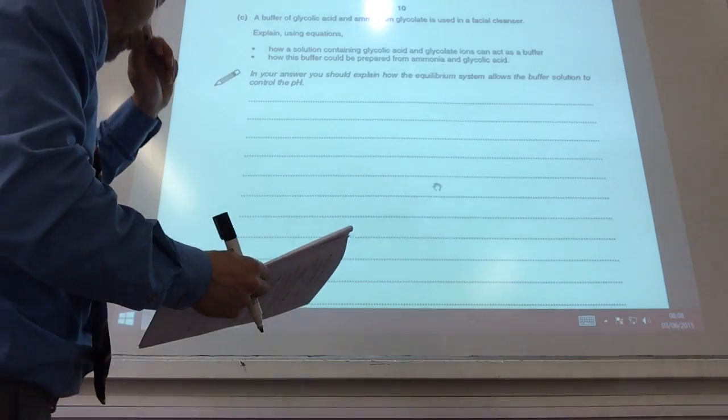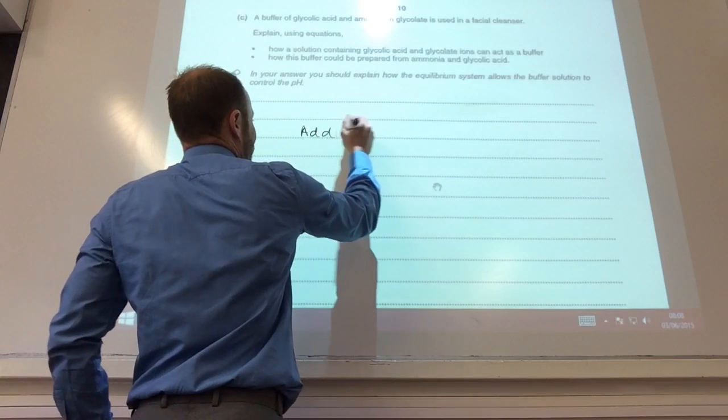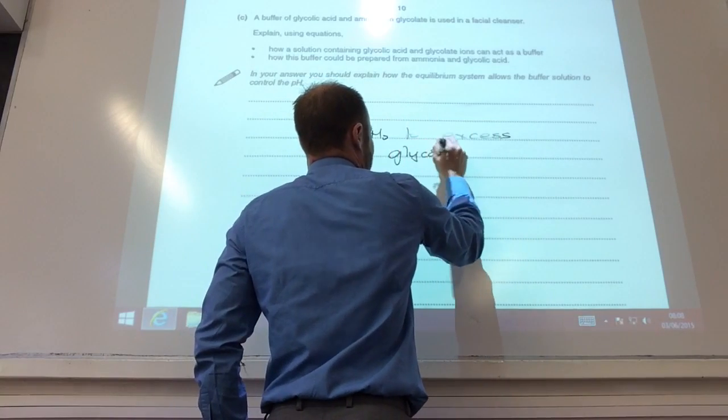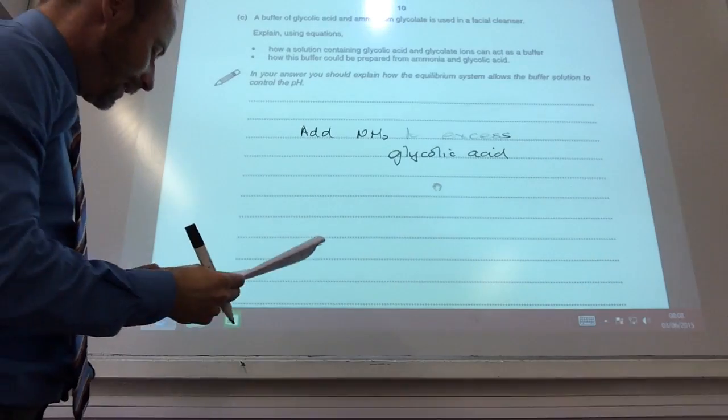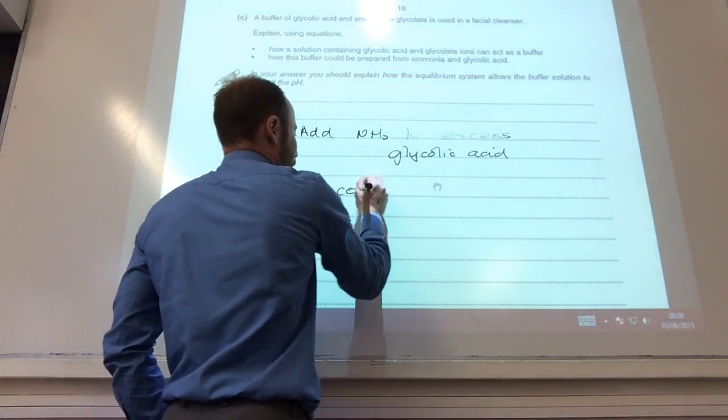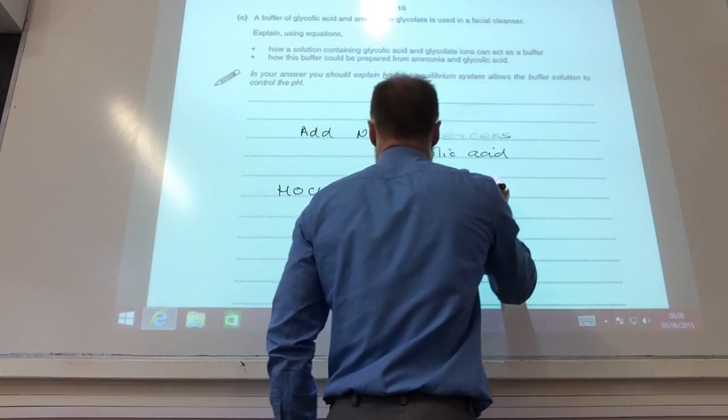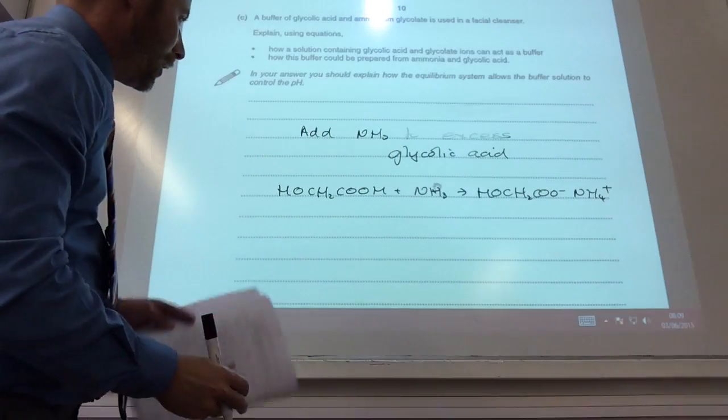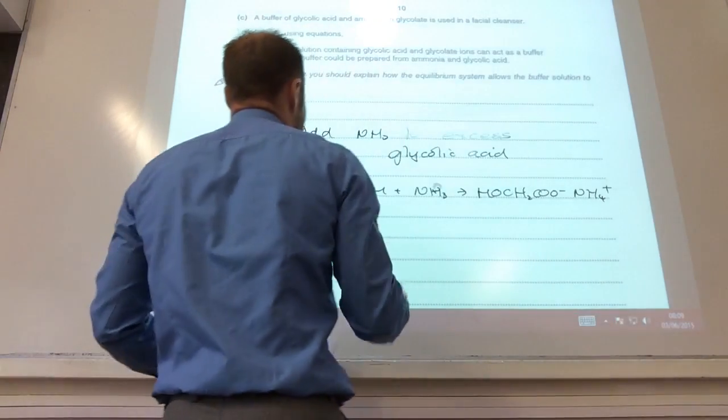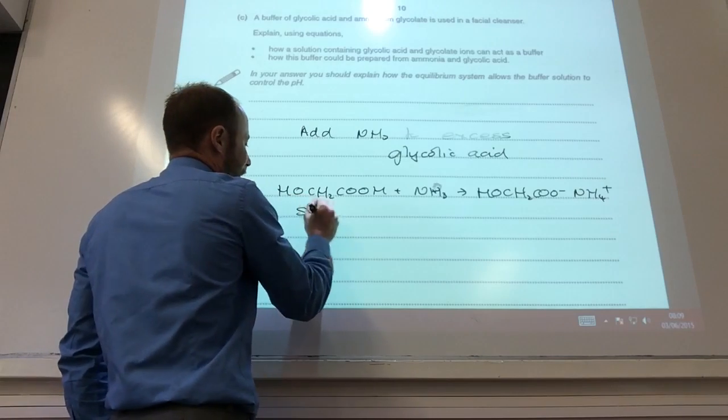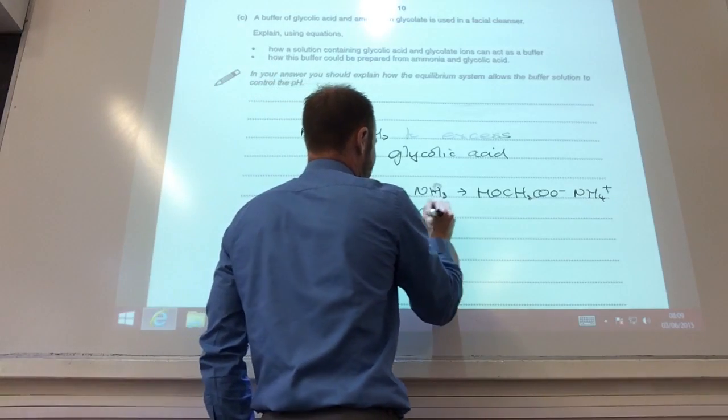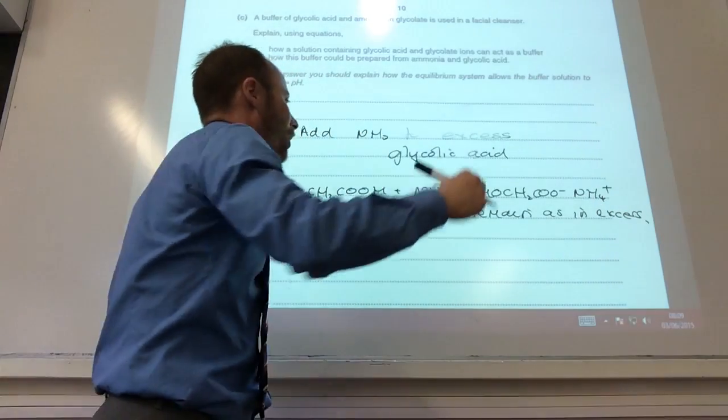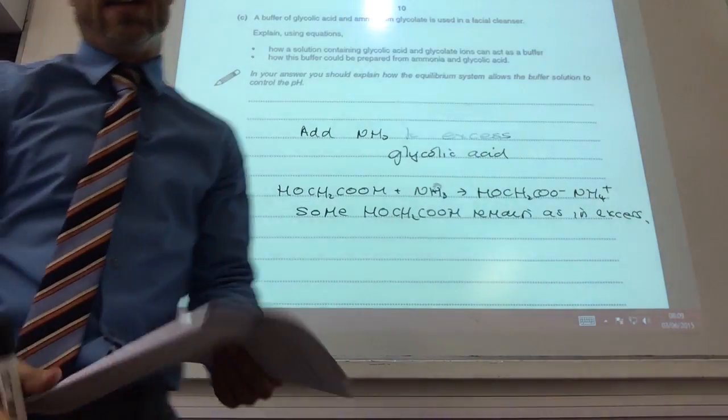This is the next point. How can I prepare from ammonia and glycolic acid? Well, I would need to add ammonia to excess glycolic acid. That means this reaction would happen: HOCH2 plus ammonia would give me HOCH2COO- NH4+, like so. So that's given me my salt there, and I've still got some glycolic acid which remains because I've got excess of that. So some glycolic acid will remain as in excess. So therefore I've got that point, that point, because I added excess, and therefore I've got a buffer.